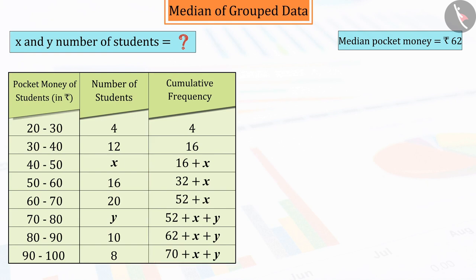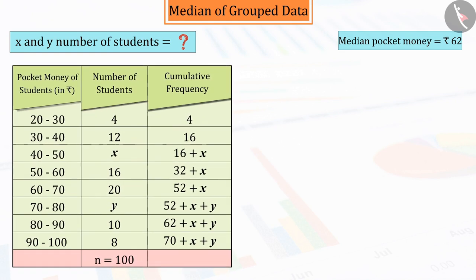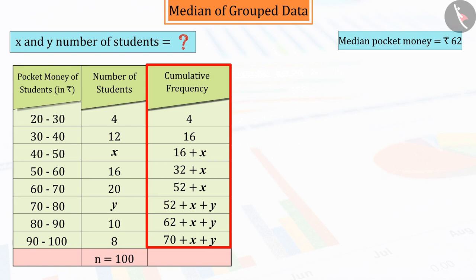It is given that the total number of students is 100. Therefore, the value of the last line of the cumulative frequency 70 plus x plus y will be equal to the total number of students, which we represent by equation 1.